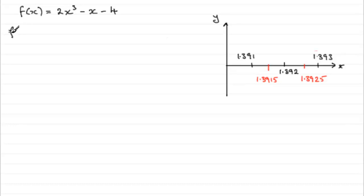We'll just put in f of 1.3915. So x is that value. And if we substitute it into the equation, we need to do 2 times 1.3915 cubed minus the 1.3915 and then minus 4.